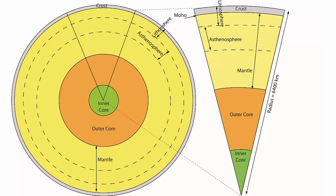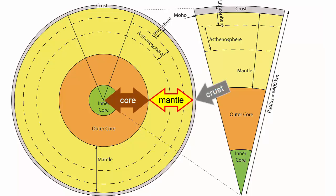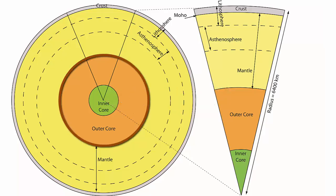First, due to density separation, the core, mantle, and crust — the primary compositional layers — were formed. Let's look closer at the core. It's made mostly of iron and is separated into two physically distinct layers. They are compositionally quite similar, mostly made of iron.